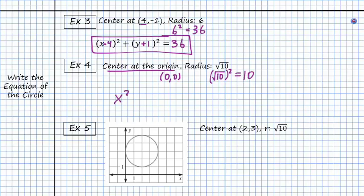So we have x² because it's at 0, plus y² because it's at 0, is equal to 10 squared, or √10 squared. So that will be my equation.